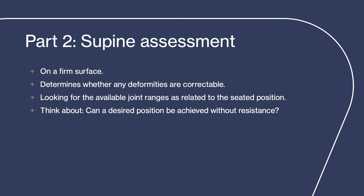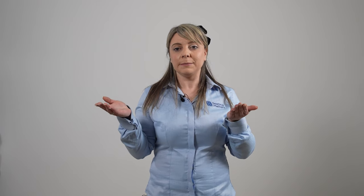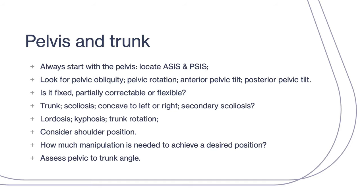Part two is the supine assessment, where the person is lying and assessed on a flat surface. Use a plinth or a firm mattress. This is where we can identify if any deformities are fixed or flexible. We are looking for the joint ranges as related to the seating position — can a desired position be achieved without resistance or pain? During the supine assessment, start with the pelvis and note any tilt, obliquity or rotation, and whether the deformity is fixed or flexible.